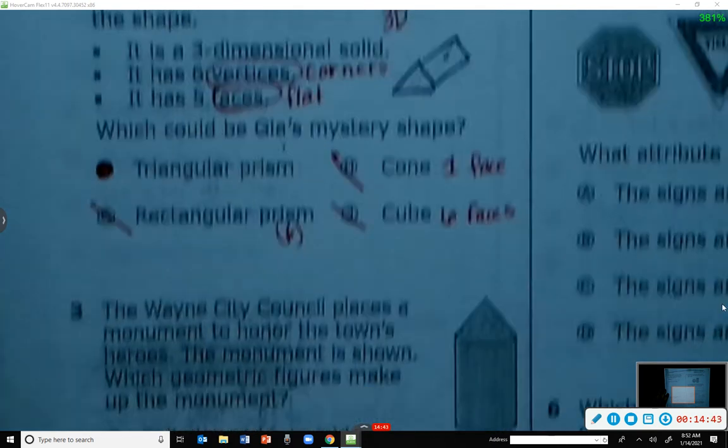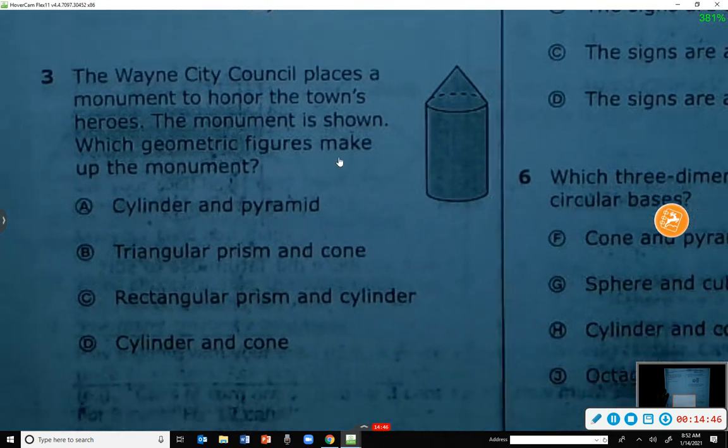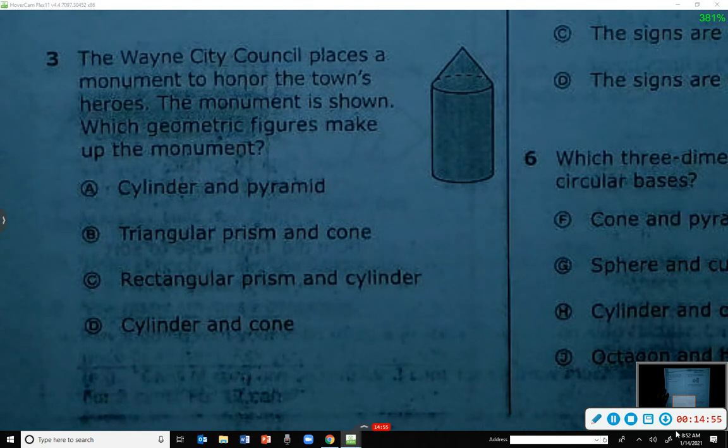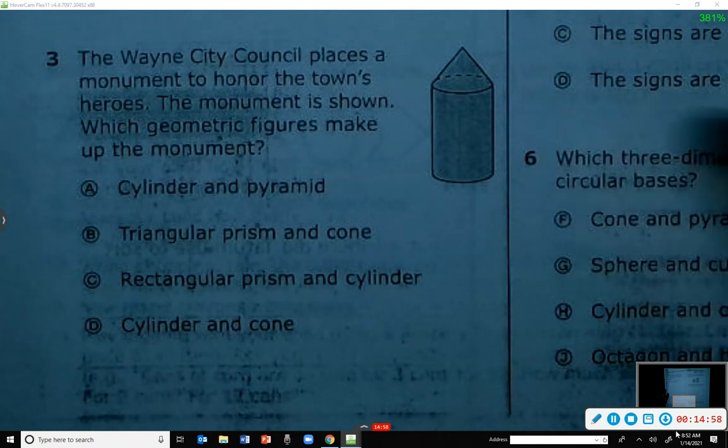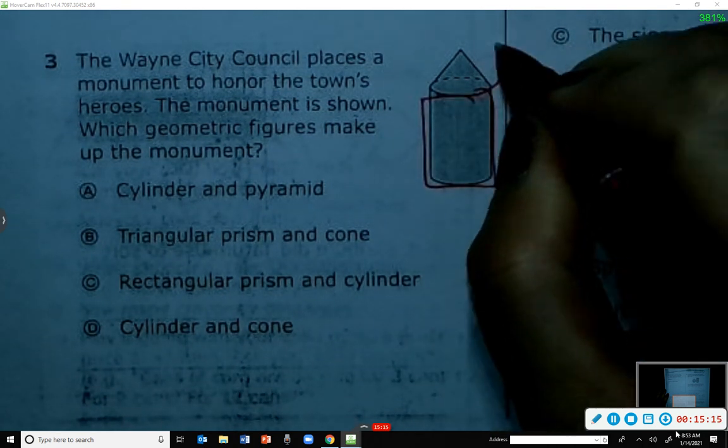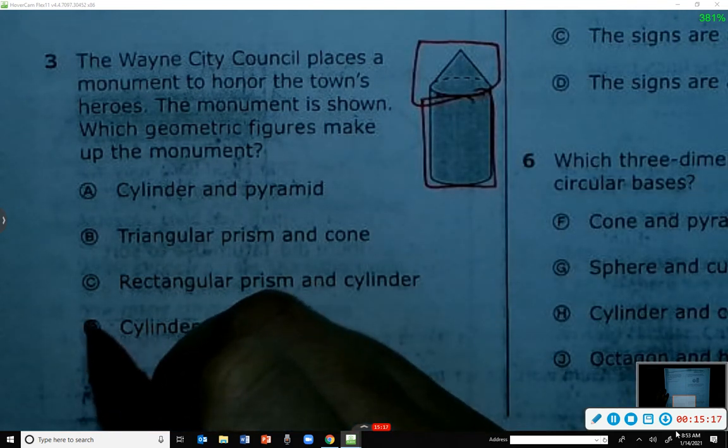Number three. I want you guys to read that and try that one on your own too. We're looking at this monument. It says the Wayne City Council places a monument to honor the town's heroes. The monument is shown. Which geometric figures make up the monument? Evangeline, what did you get? I got D. D, good. This is your cylinder and this is your cone. So D is correct.